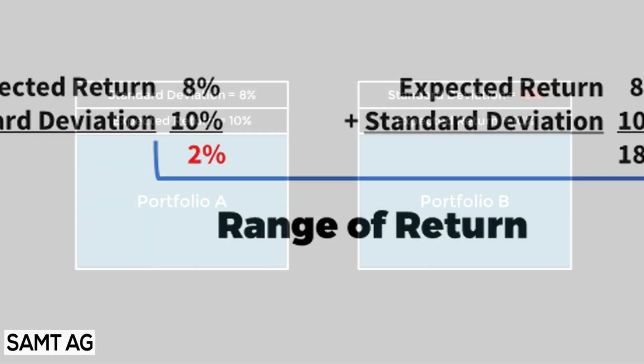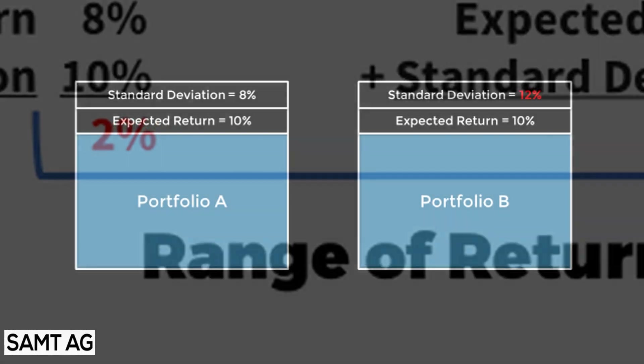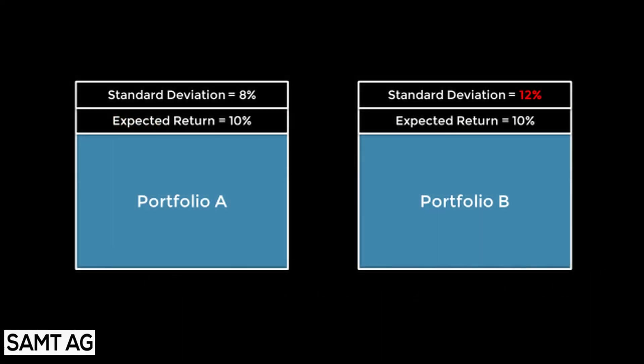Suppose two portfolios, A and B, have an expected return of 10% each. But A's risk is 8%, while that of B is 12%. Looking at these two portfolios, you would think both give the same returns, but A has lower risk — so you'd buy A.